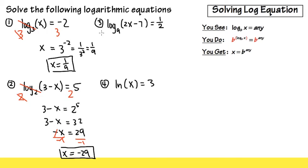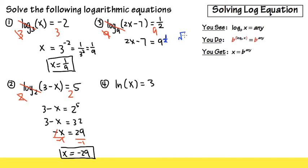Moving on to number 3. We have log base 9, inside is 2x minus 7, and on the right-hand side we have a fraction: 1 half. So we do the base, which is 9 — 9 to this power and 9 to this power. 9 and log 9 cancel out, and we will just have 2x minus 7, and this time we have 9 to the 1 half power. The 1 half power means we take the square root. So we will have 2x minus 7 is equal to the square root of 9, which is 3.